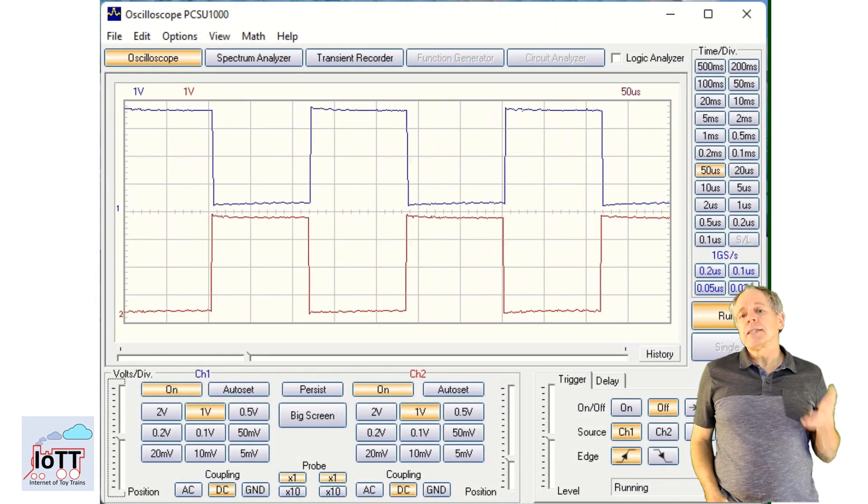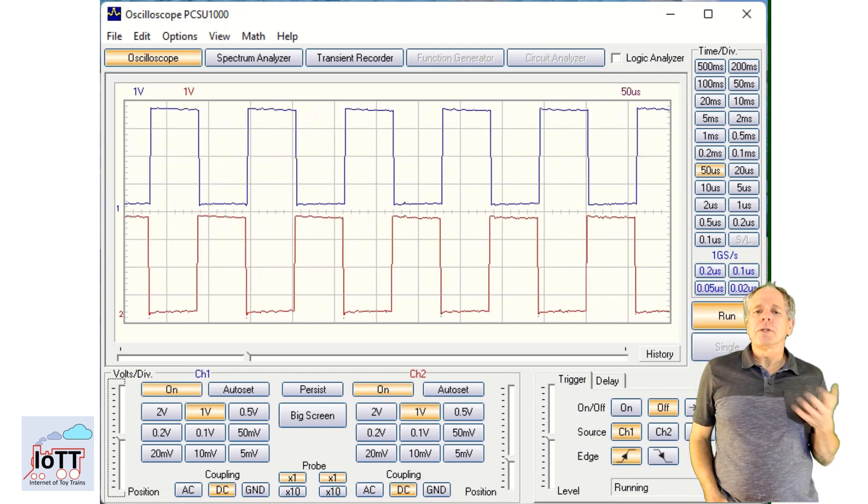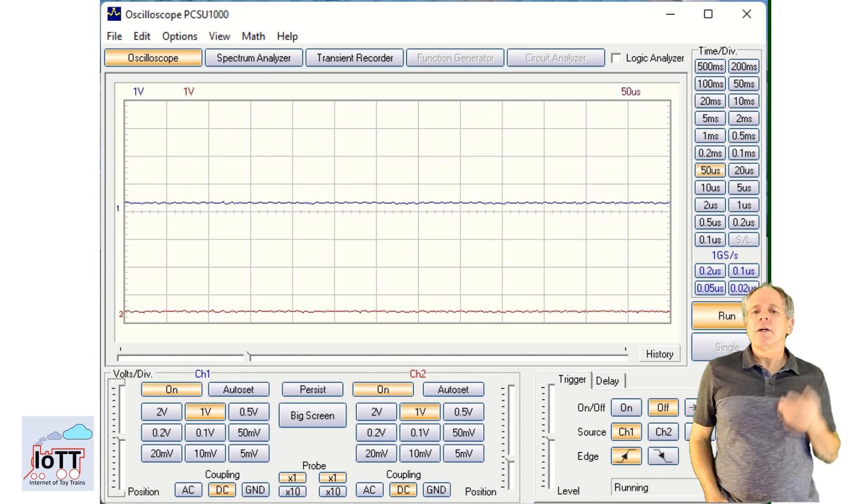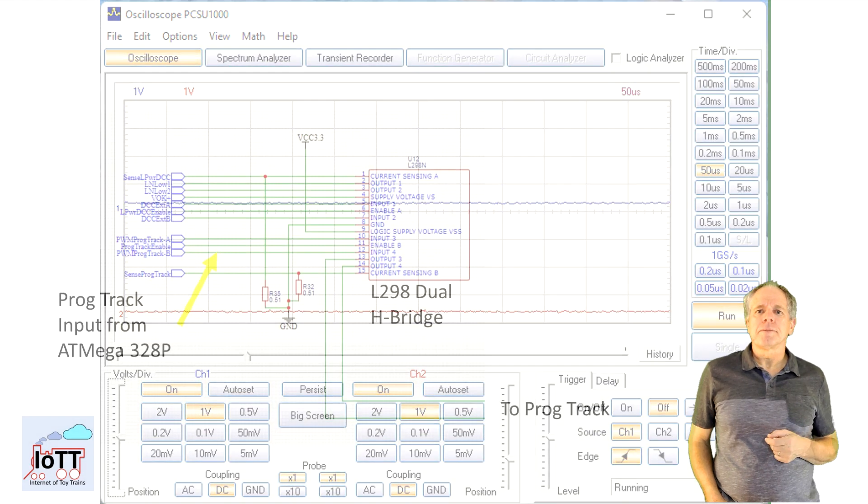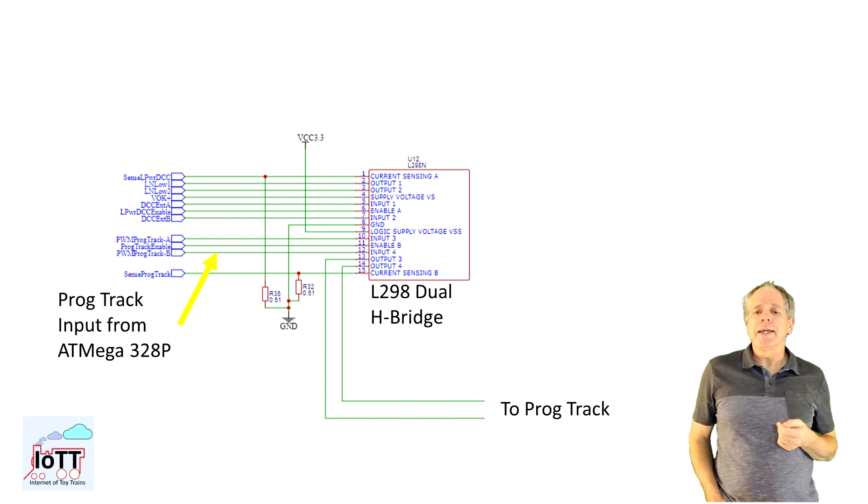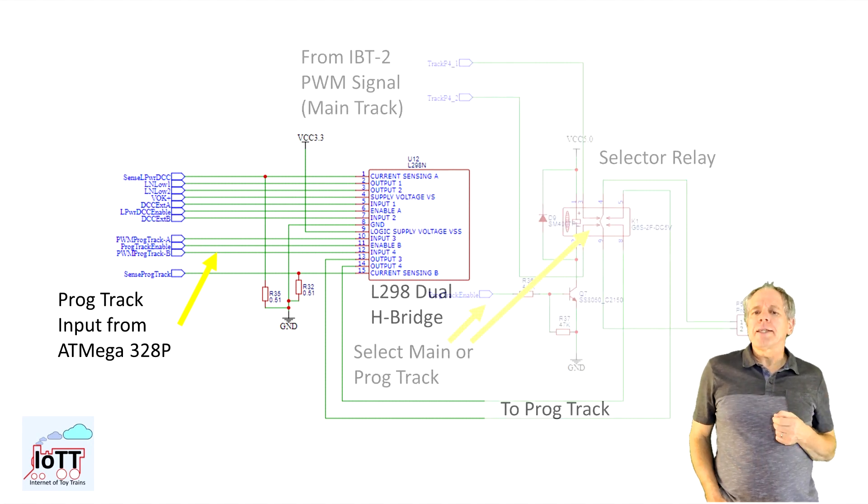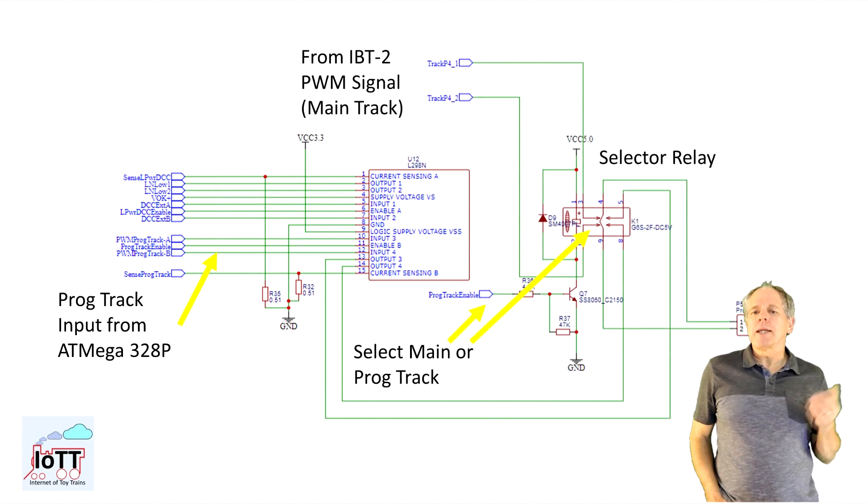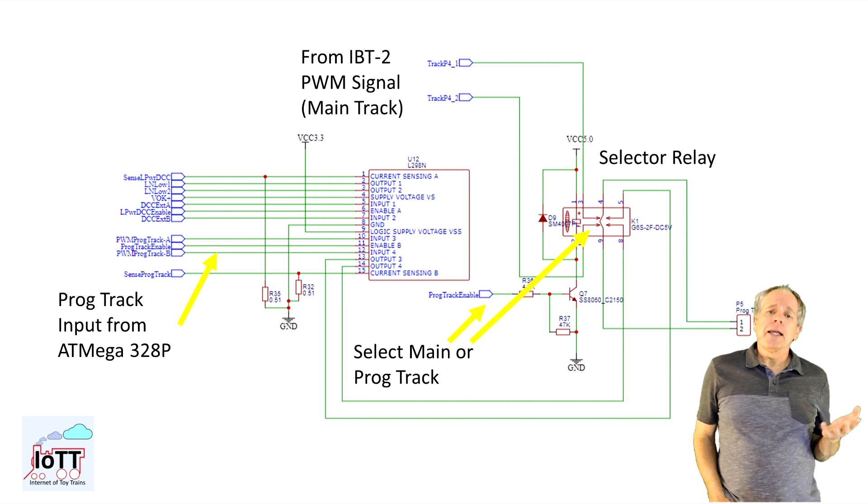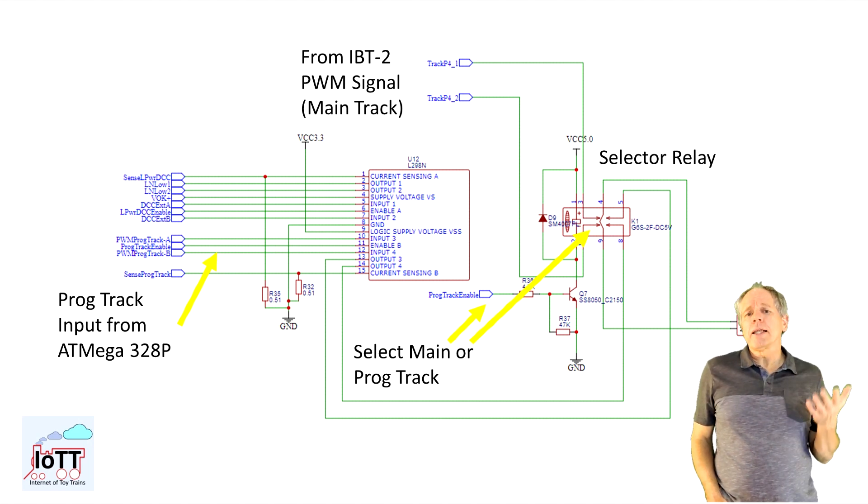I then activated select booster and the DCC signal on the oscilloscope stopped indicating that both the processor and the selector circuit are working properly. The programming signal from the processor is amplified by the onboard L298 dual H-bridge chip so that was the next module I tested. From the L298 the amplified program track signal runs through a relay to the programming track output of the board.